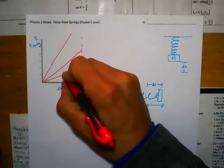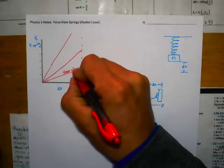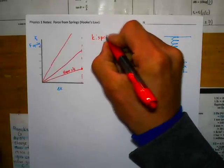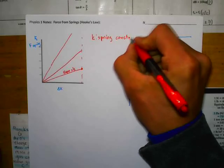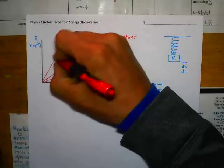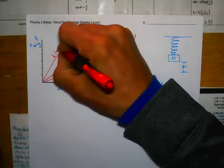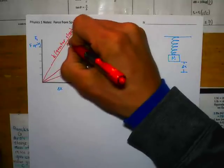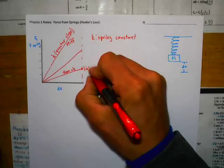The slope of this graph we call K, also called the spring constant. From the graph, a greater K value means a greater slope — that would be like a stiff spring. A lower slope corresponds to a lightweight, easy-to-stretch spring.